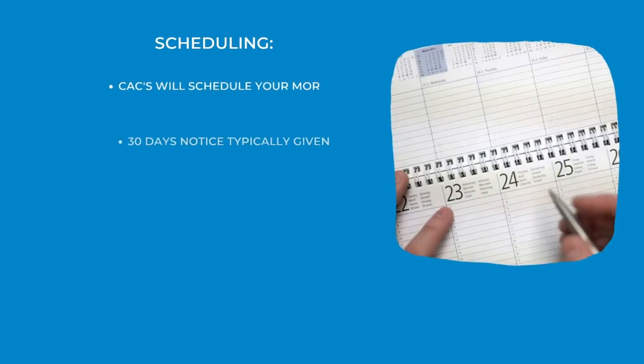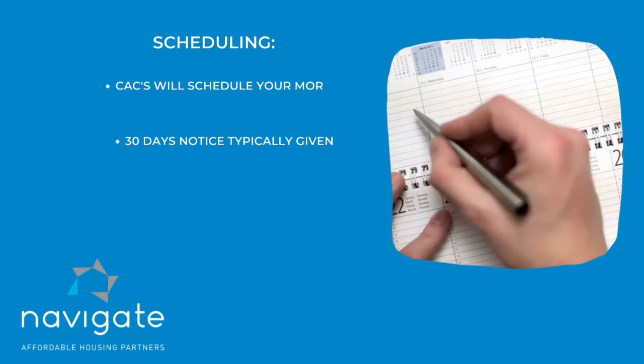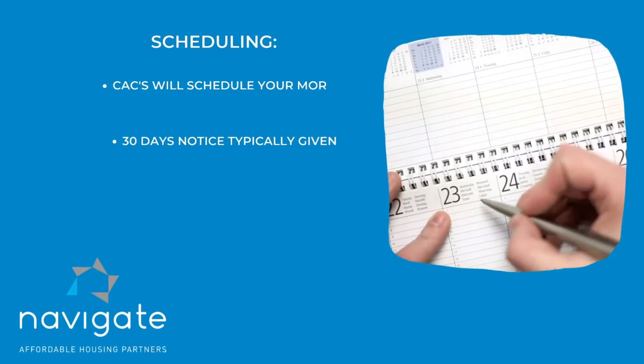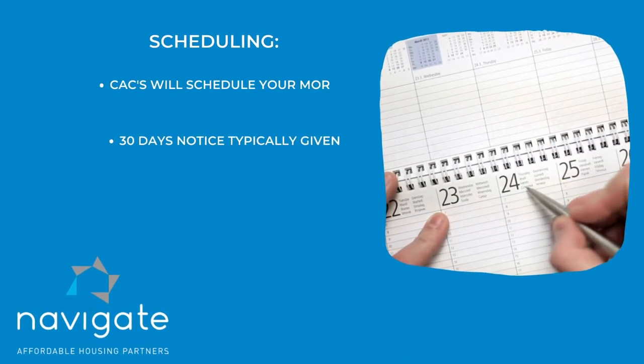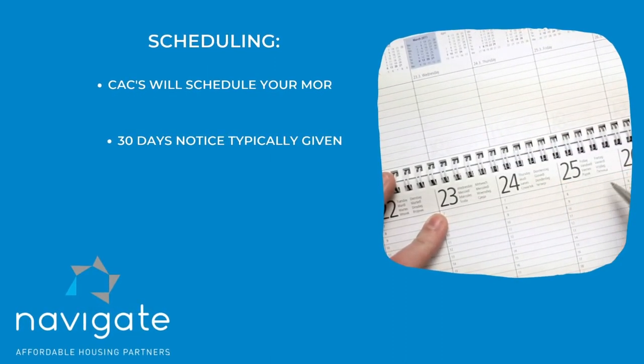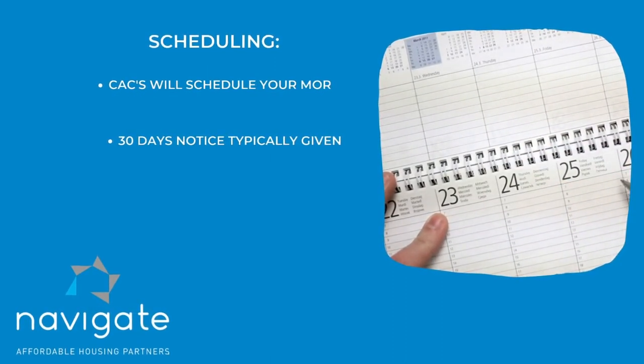We talked about scheduling. You know that we will schedule the MOR with you, the CAC wheel, and usually you have at least 30 days.